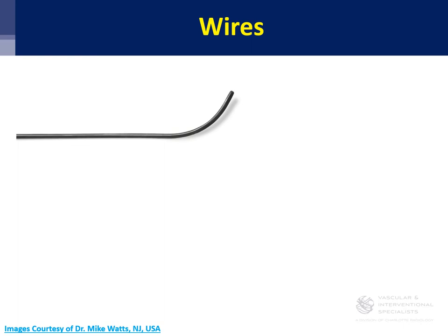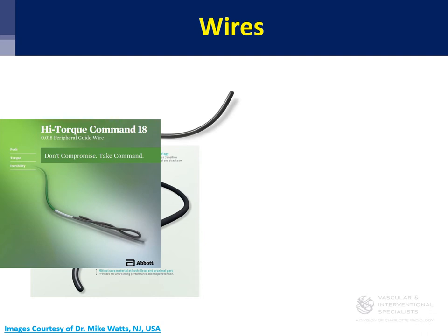In terms of wires, there are many different types — hydrophilic, non-hydrophilic, curved, non-curved. From my perspective, for iliac disease I tend to stay on an 0.035 platform. For SFA I'll usually stay 0.018 or 0.035, and anything below the knee, 0.018, occasionally 0.014, and then below ankle and pedal loop, stick with an 0.014. I'm very heavy with a glide wire advantage, as well as command wires — those are my two go-to wires.